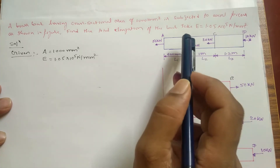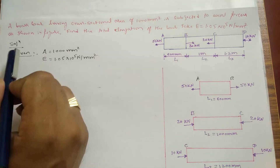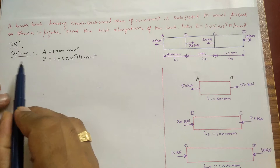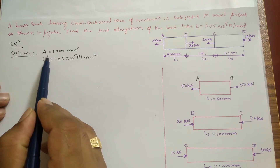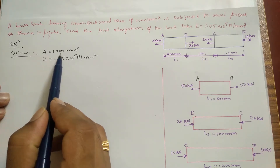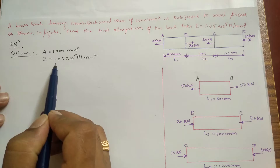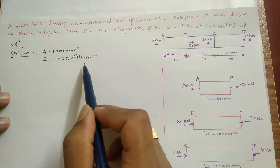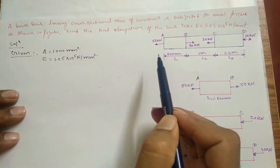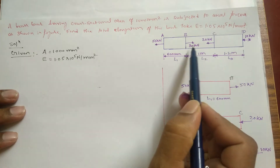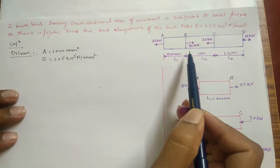Let's start the solution. The given data: cross-sectional area of the bar is 1000 mm², and E is also given as 1.05 × 10⁵ N/mm². Now the other data given includes the loads and the lengths of the sections.